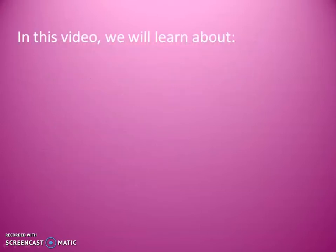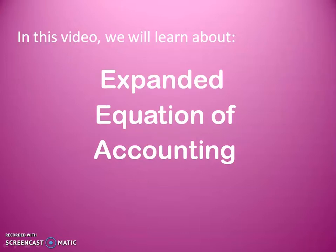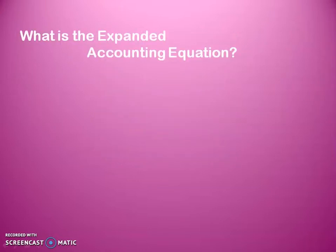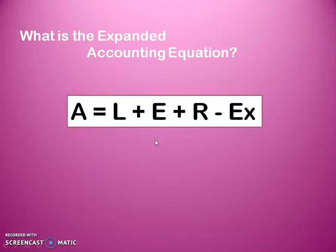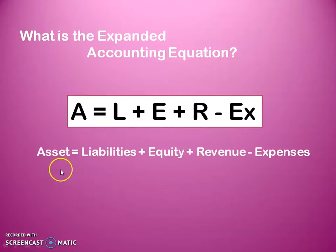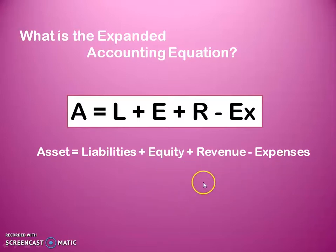So in this video, we will learn about the Expanded Equation of Accounting. So first, what is the Expanded Accounting Equation? That's A equals L plus E plus R minus X. Last time we learned about A equals L plus E, so now there's an additional plus R minus EX. These are Assets equals Liabilities plus Equity plus Revenue minus Expenses. So we already learned about Assets, Liabilities, and Equity, so now we will learn about Revenue and Expenses.